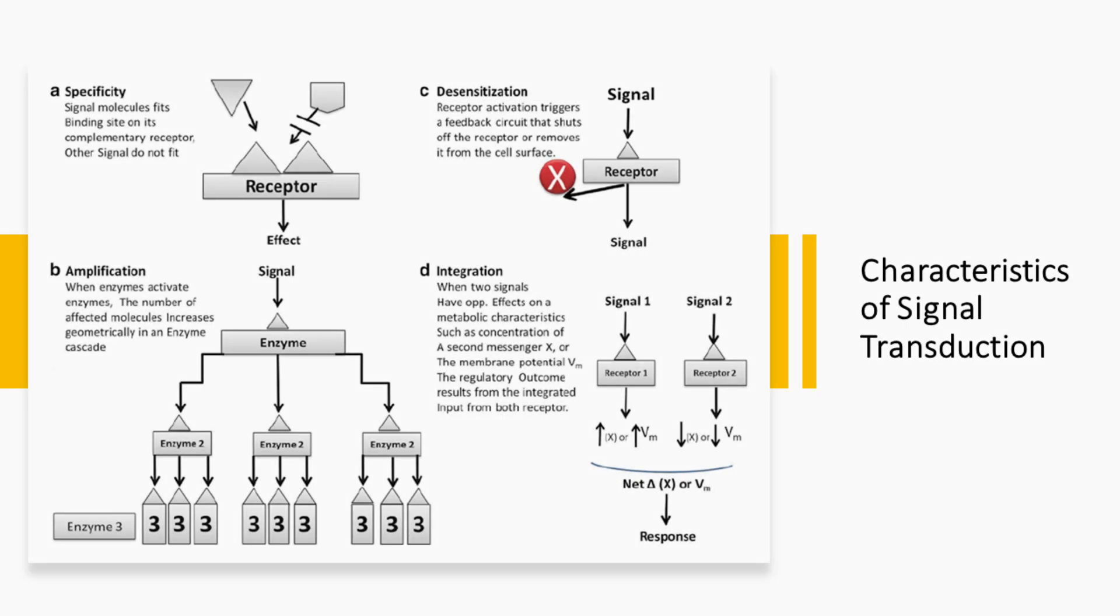There are a few characteristics of all cell signal transduction. First is the specificity of the signaling molecule. The most important thing about the signal is that the signal, which binds to a receptor in a cell membrane, is specific for a particular receptor, and a different signal won't bind to the same receptor.